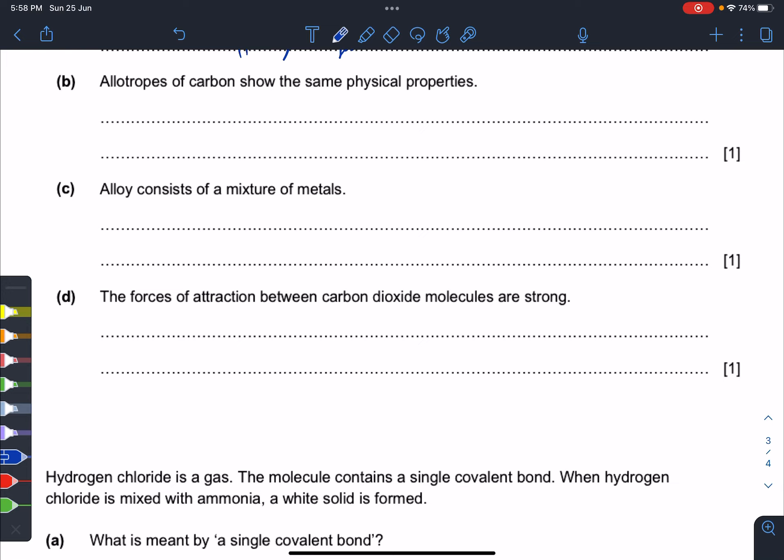Allotropes of carbon—examples are diamond and graphite. They have different physical properties, so this is false. You don't really have to go so much in depth about weak intermolecular forces between layers. You can just say that diamond is hard, but graphite is soft and slippery.